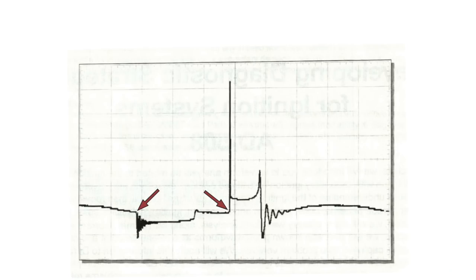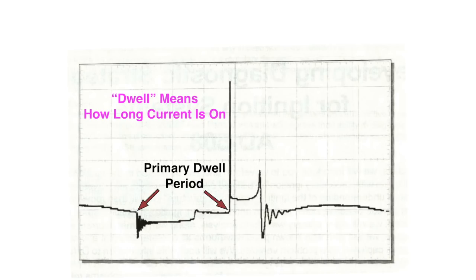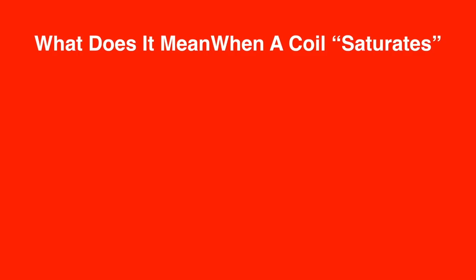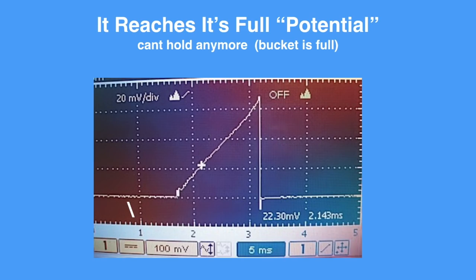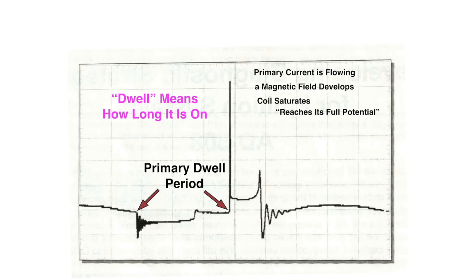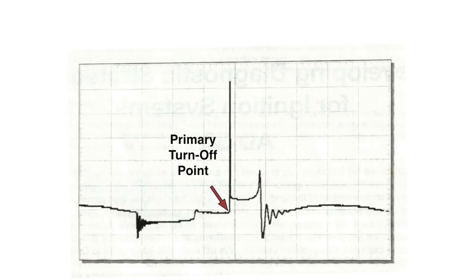Now we have two arrows — this is your primary dwell period. Dwell means how long is the current on, how long is it flowing? Primary current is flowing at this point, a magnetic field develops, so the coil saturates. What does it mean when a coil saturates? It reaches its full potential — the bucket is full. The coil saturates, reaches its full potential, and our next arrow is the end of the primary dwell period — it is no longer on.